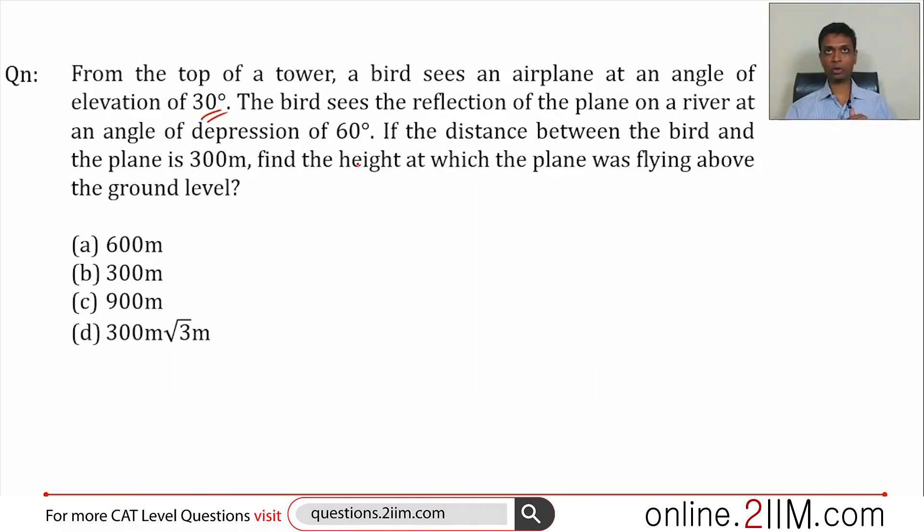The bird is sitting on top of the tower. It looks up and at 30 degrees it finds the plane. It looks down and at 60 degrees it finds the reflection of the plane. The distance between the bird and the plane is 300 meters. Find the height at which the plane was flying above the ground level.